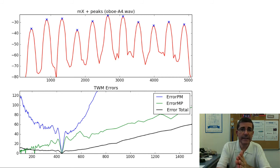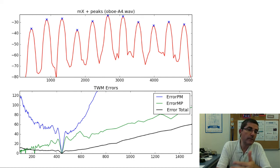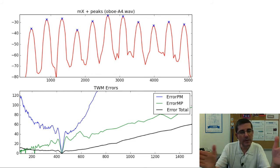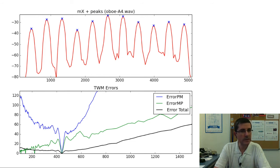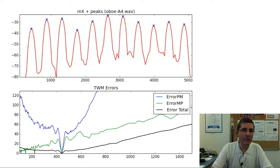Looking at the error functions for the oboe sound: the blue curve is predicted-to-measured, the green is measured-to-predicted, and the black is the total error, for possible fundamental frequencies ranging from 0 to 1500 Hz — sweeping the full range at 1 Hz increments. Clearly there is one local minima, and of course it's at 440 Hz, which is the fundamental frequency of this oboe sound. This is an easy case, and there is not much doubt for the algorithm that the fundamental frequency is 440 Hz.